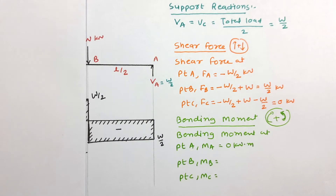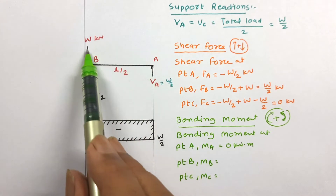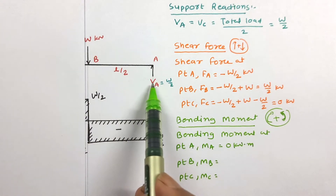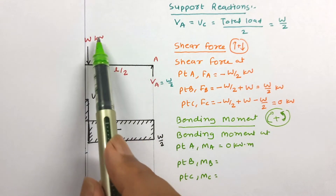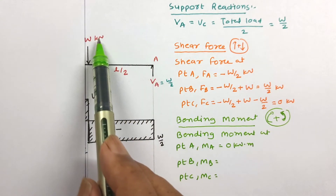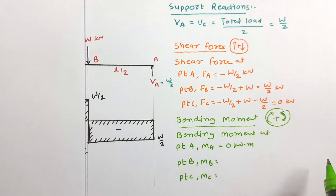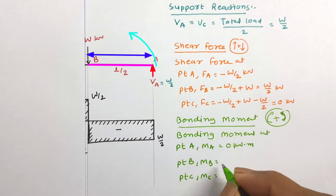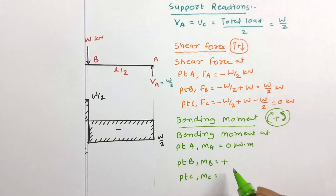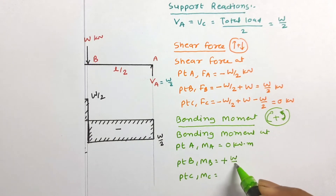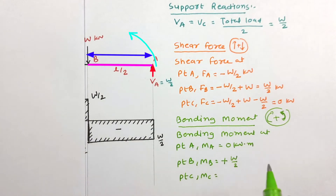At point B, on the right hand side there is one reaction force Vc equal to W/2. It creates a moment in the anticlockwise direction, which is positive. The value of the force is W/2 and the distance of this force from B is L/2. So the bending moment at B is W/2 × L/2 = WL/4 kN·m.